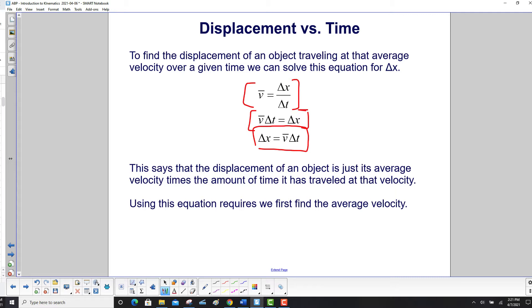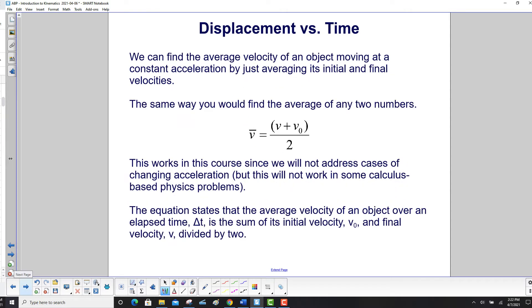Using this equation, however, requires we have to first find the average velocity if it's not given to us. We can find the average velocity of an object very simply, as long as it's moving at a constant acceleration, which will happen in this course, by just averaging its initial and final velocities.